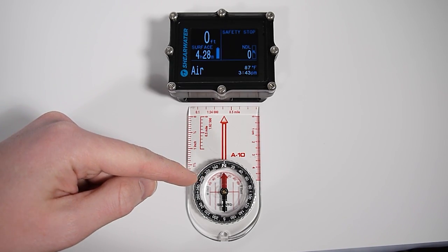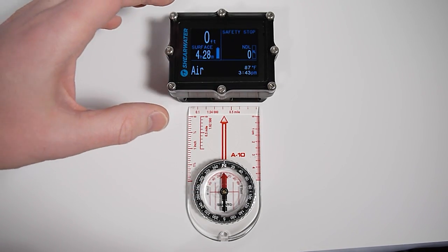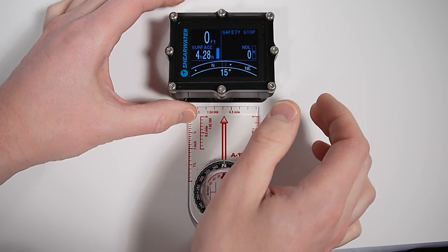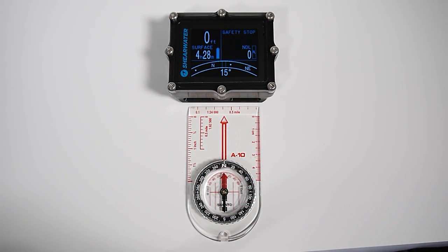I set this analog compass up to point north and if I press the right button once we can go into the compass and we'll see that it's currently off around 15 degrees.